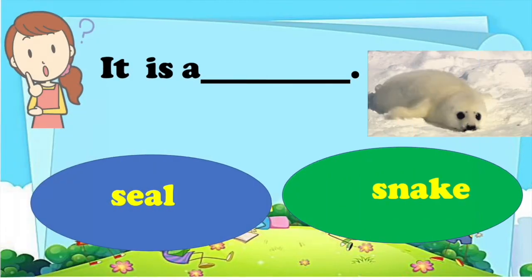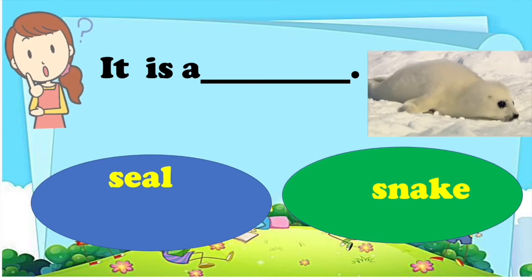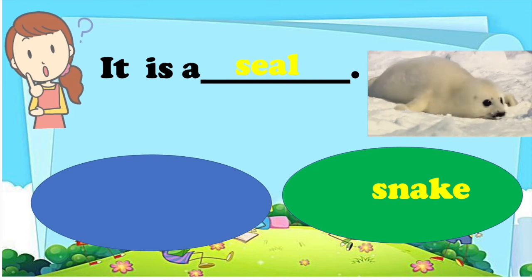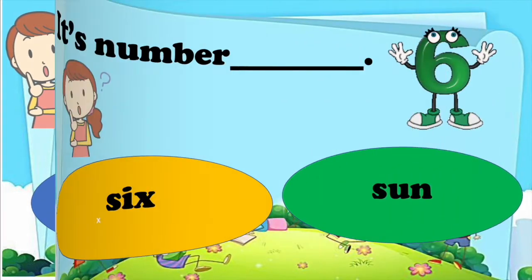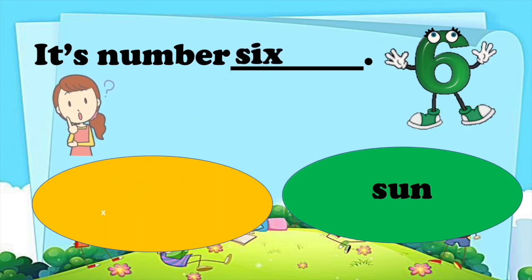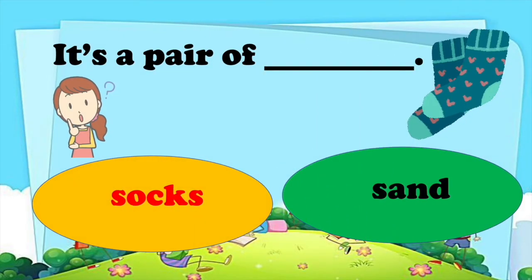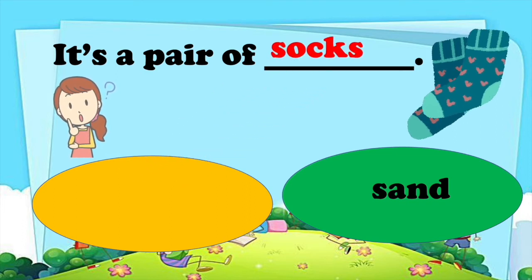Very good. Next we have — what's this picture? It is a seal. Wonderful! And how about this number? It's number six. You are correct. Let's proceed to the next: it's a pair of socks or sand. Yes, you are right. It is socks. A pair of socks.